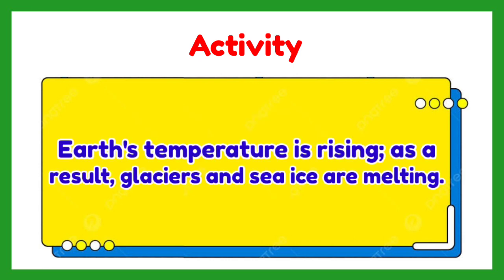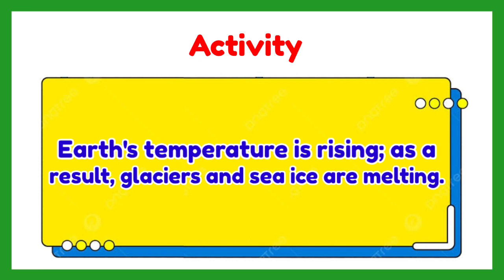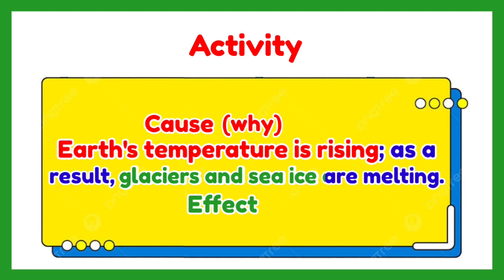'Earth's temperature is rising. As a result, glaciers and sea ice are melting.' The cause is: the Earth's temperature is rising — it tells why the glaciers and sea ice are melting. The effect is: the glaciers and sea ice are melting, which is the result of the first event, introduced by the connector 'as a result.'